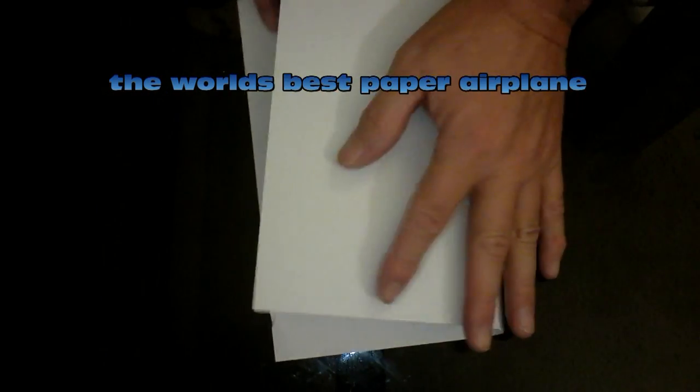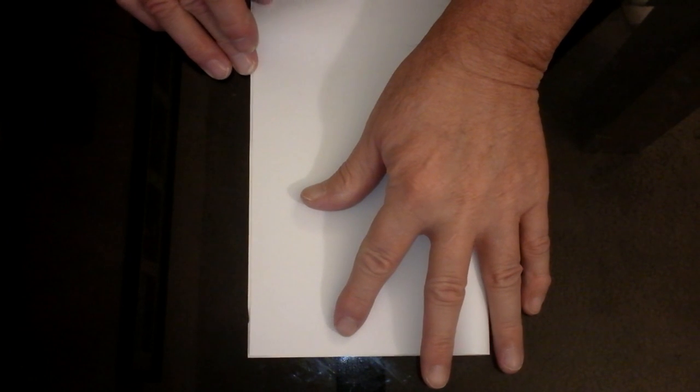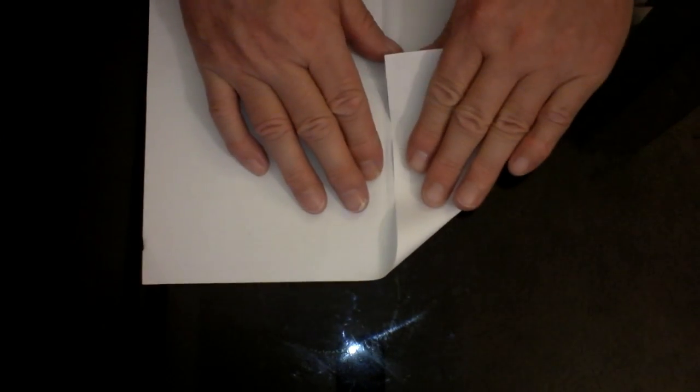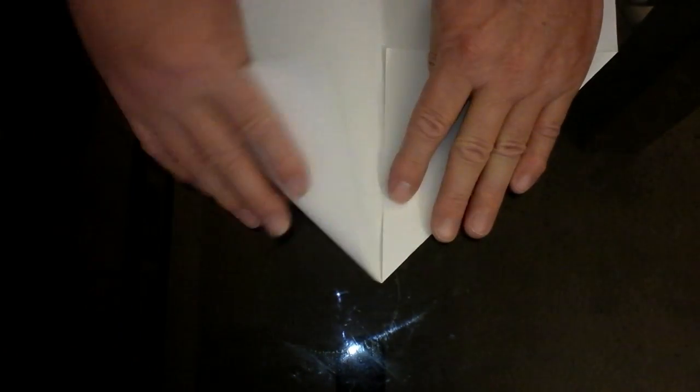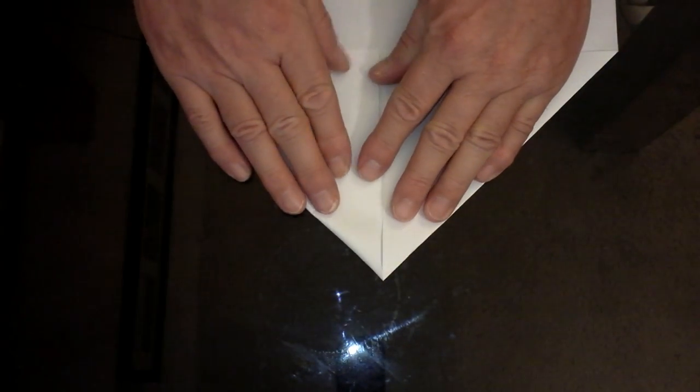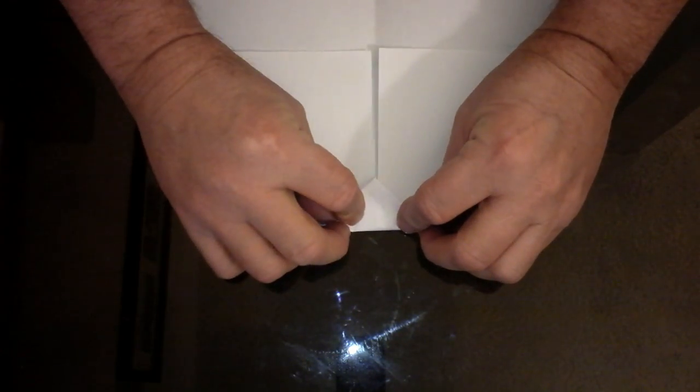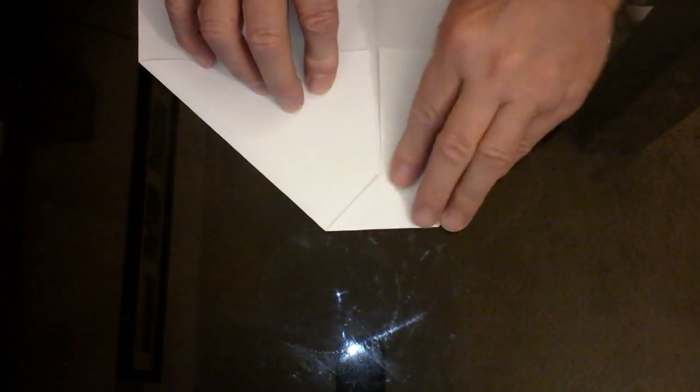Now be sure to fold them exactly to the edges, to the line in the center. This is important. Take the tip and bring it in - that's the ballast for the plane that gives it the inertia to go forward.